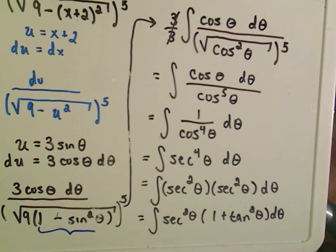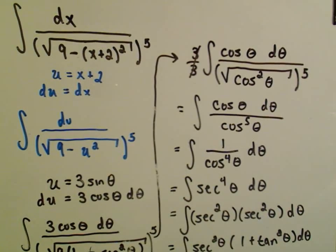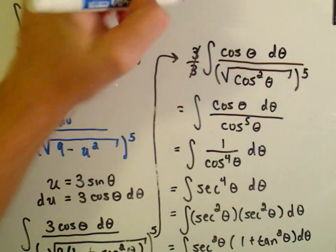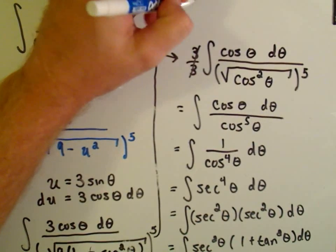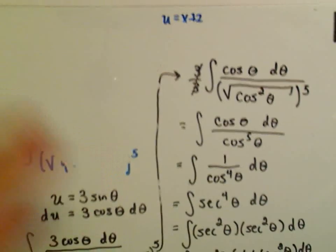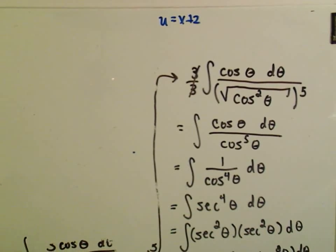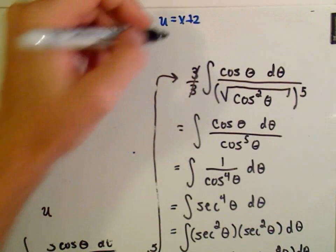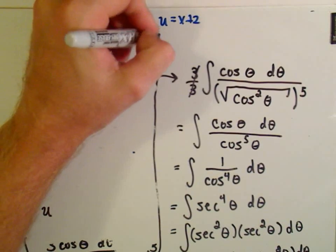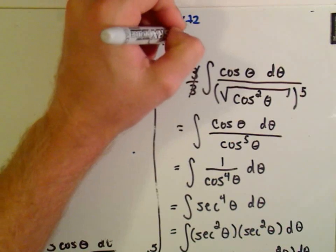So this is just a trigonometric integral now. I have to give myself some more space. So, we want to remember that our u is x plus 2, so I want to write that down real quick so I don't forget that. And now we'll go back up here. We also want to remember that we use the substitution, u equals what we use, u equals 3 sine theta.